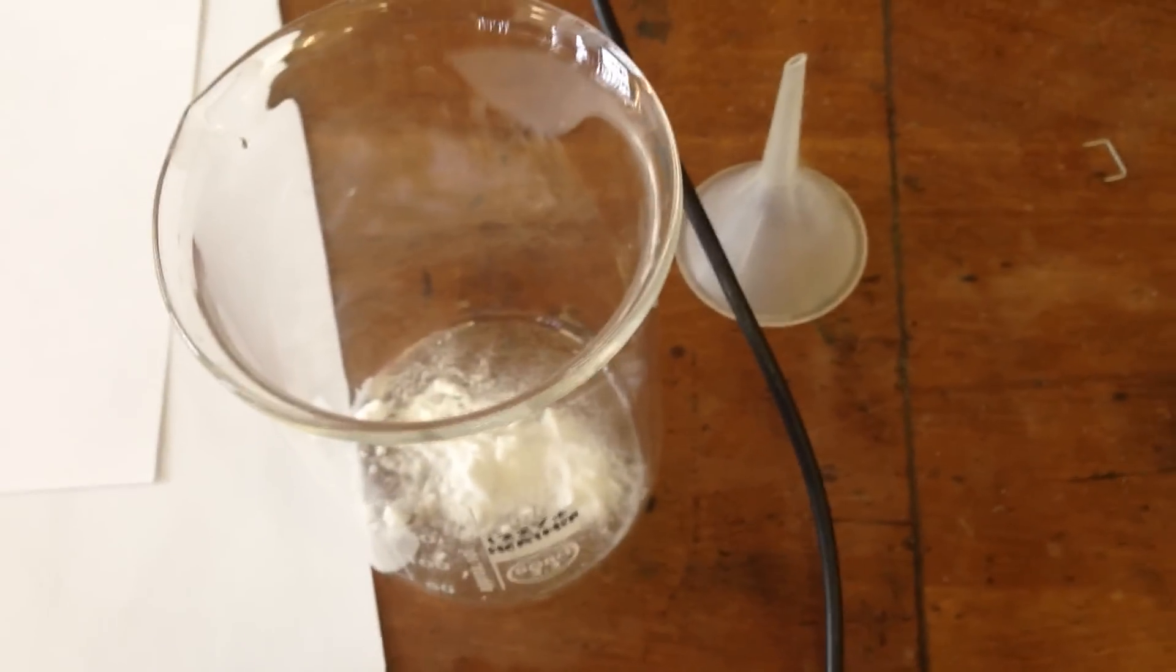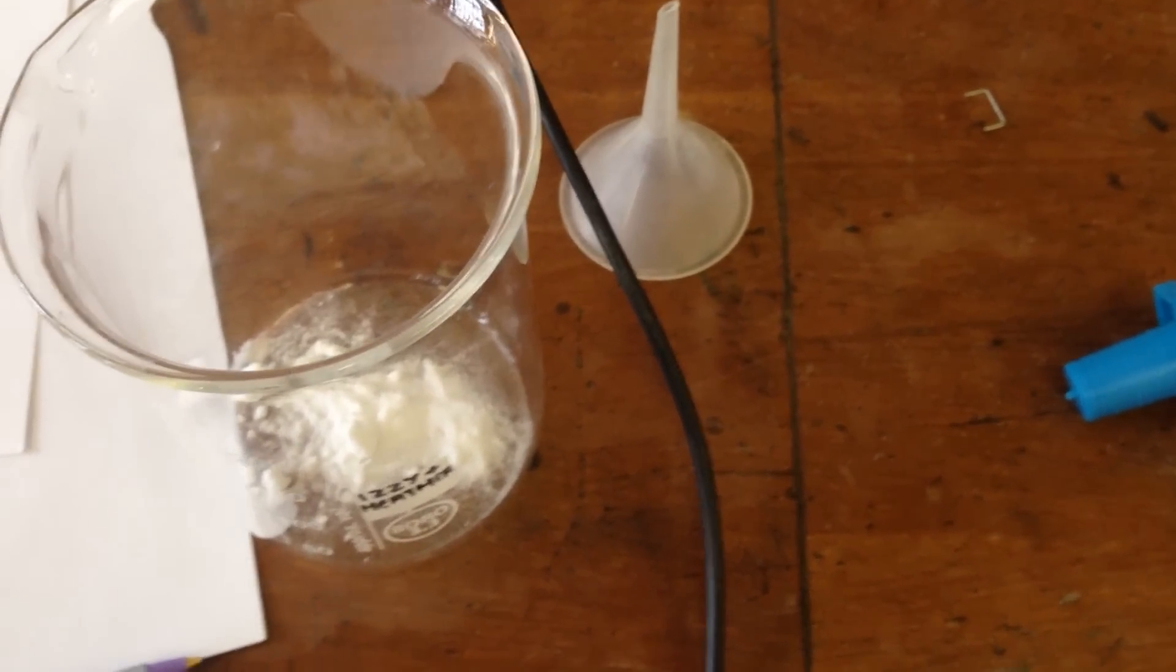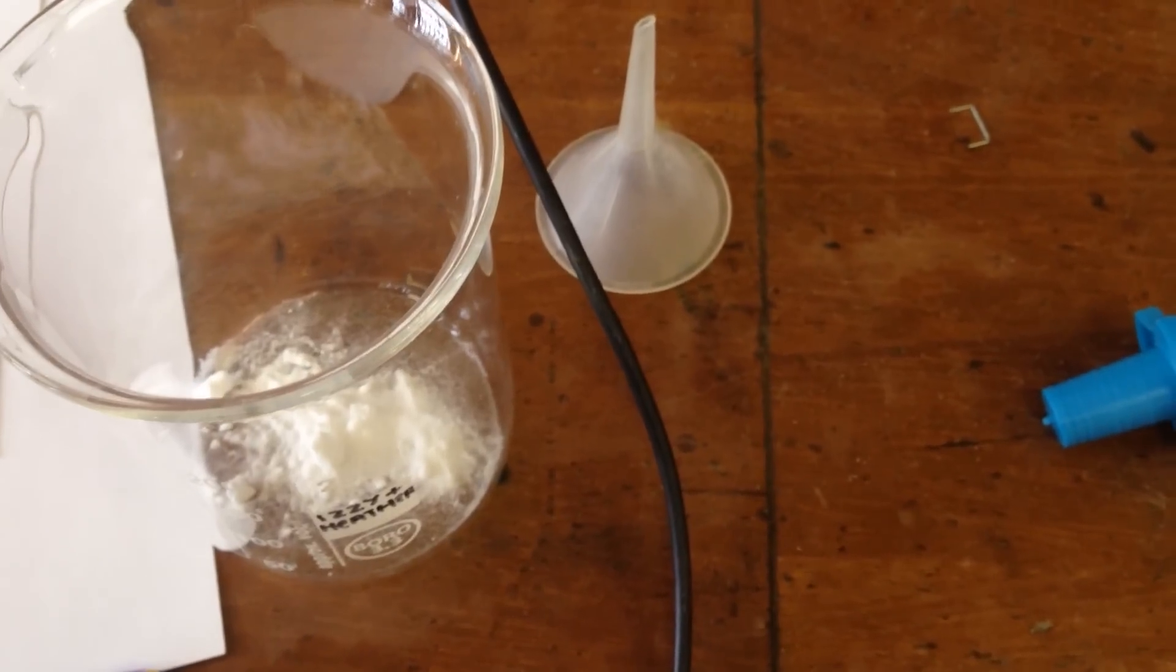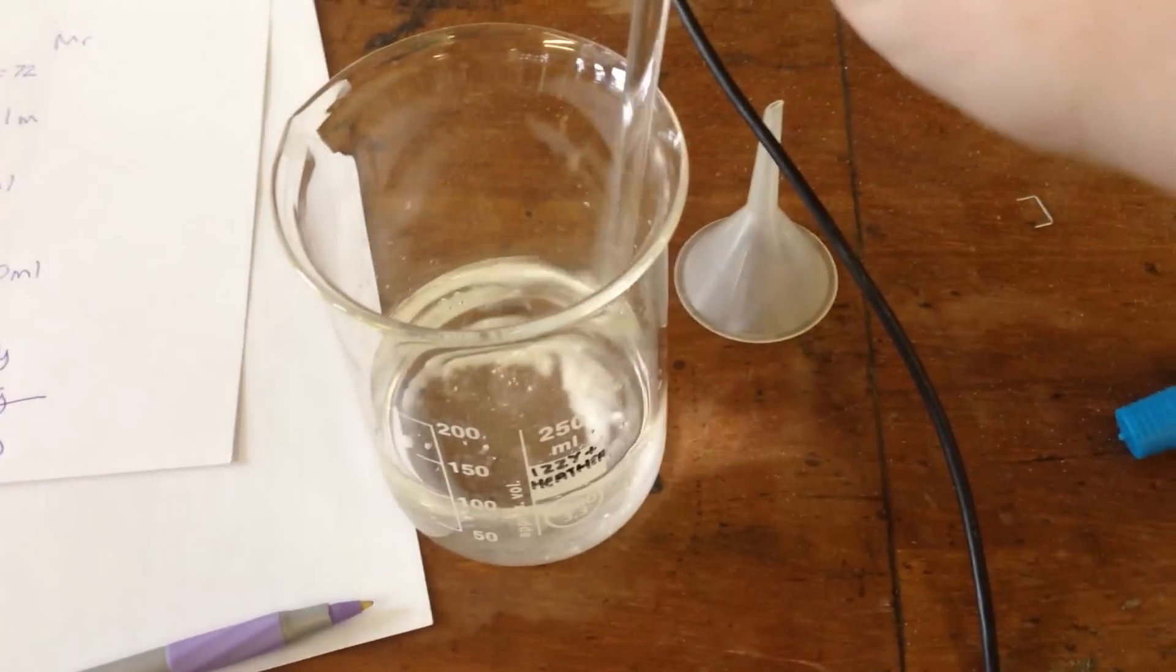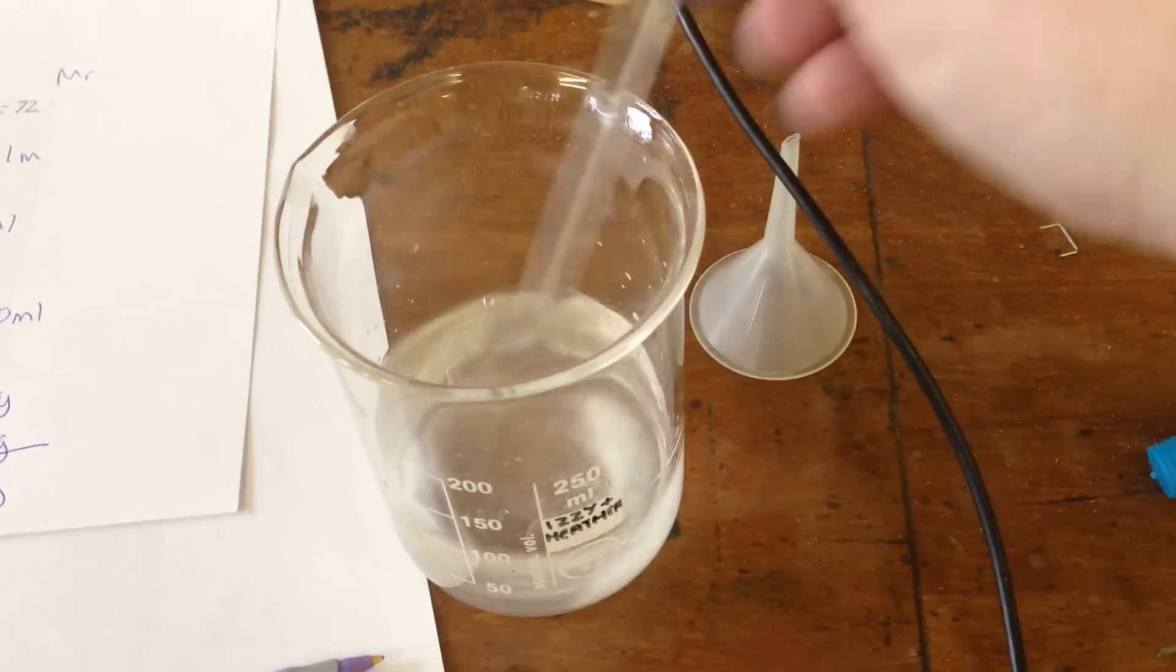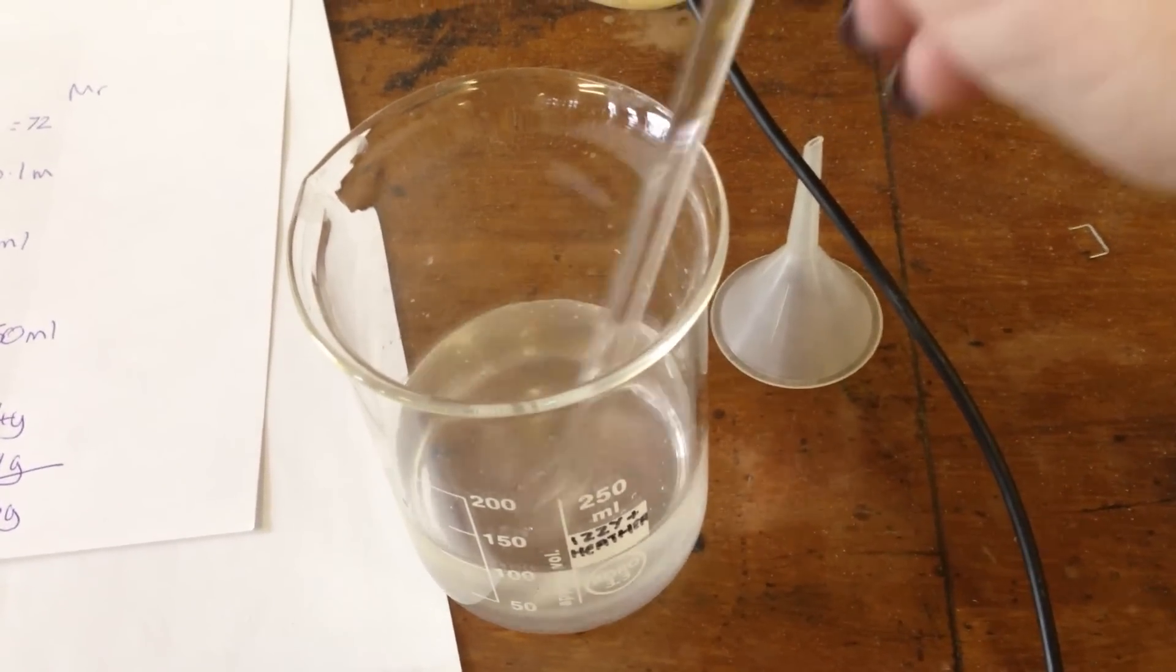So here's my sodium hydrogen carbonate in my beaker. What I need to do now is to dissolve this in about 100ml of water. So I've put that 100ml of water into my beaker with my sodium hydrogen carbonate that we've weighed out. I'm just going to stir this using a glass stirring rod until it is completely dissolved.